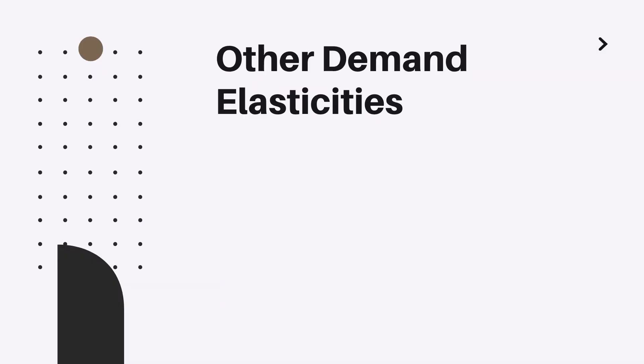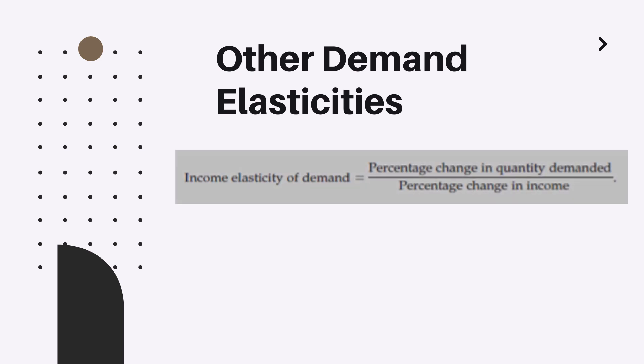One may think of other demand elasticities. For example, income elasticity of demand, which shows percentage change in quantity demanded divided by the percentage change in income. Basically, income elasticity of demand shows the relation of the change in income and change in quantity demanded.